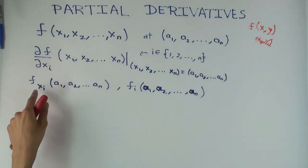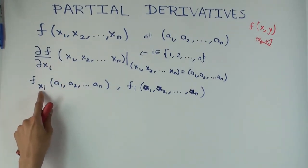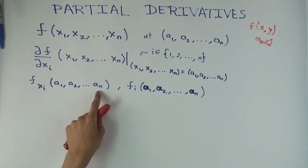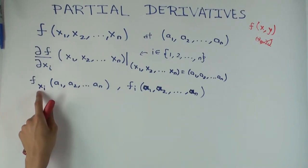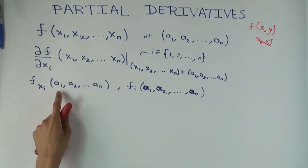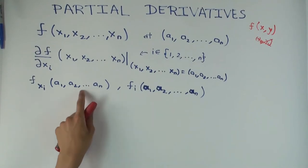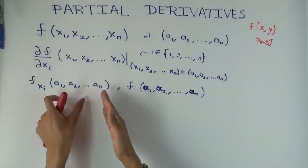So for each input you have a partial derivative with respect to that. Now this thing could also be denoted like this, it could be f_xi of a1, a2, an. It just means the partial derivative of f with respect to xi at a1, a2 to an.